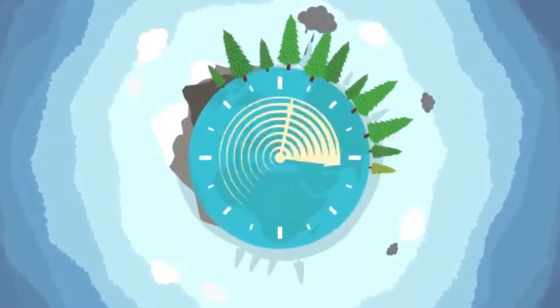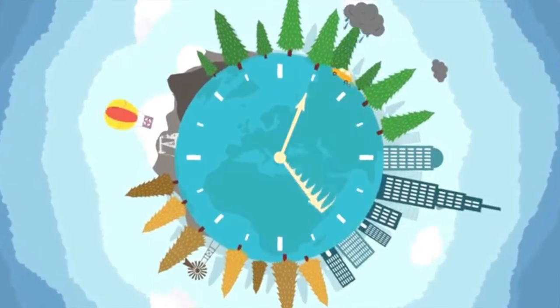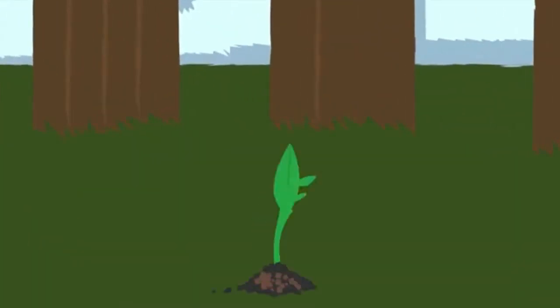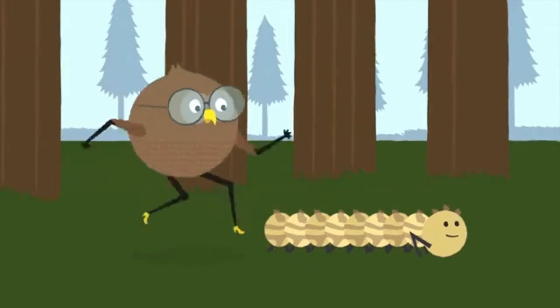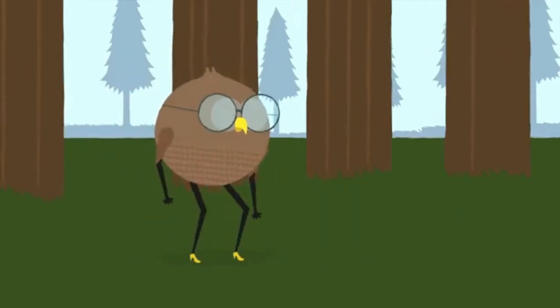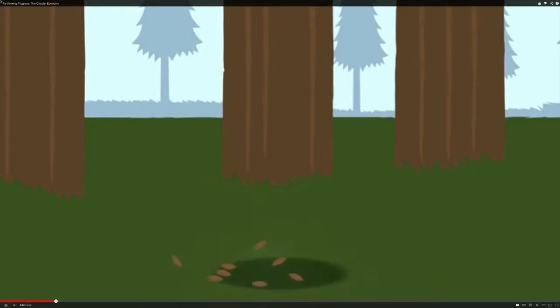Living systems have been around for a few billion years and will be around for many more. In the living world there's no landfill, instead materials flow. One species' waste is another's food, energy is provided by the Sun, things grow then die and nutrients return to the soil safely.